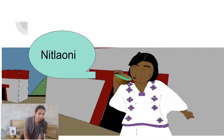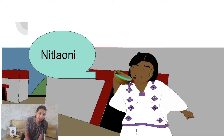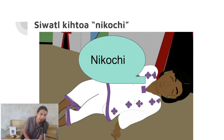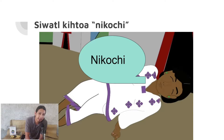We saw tlakwa before, which meant 'she is drinking,' but now with ni in front of it, she's saying 'I am drinking.' The woman also says 'ni kochi,' meaning 'I sleep.'